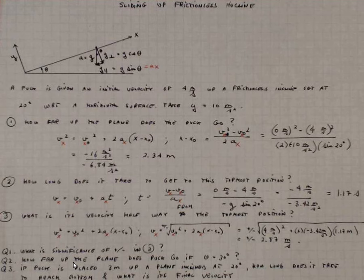Question 2. How far up the plane does the puck go if theta is equal to 30 degrees instead of 20 degrees? Assuming the same 4 meters per second v x not.